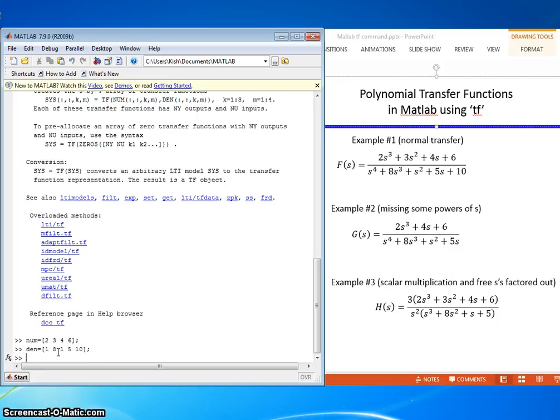And then I just build the function using tf. So f equals the tf command num comma den.